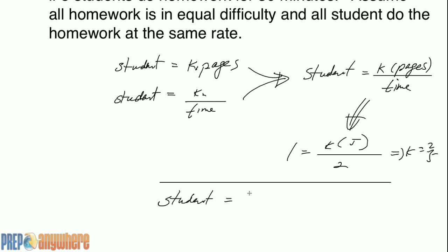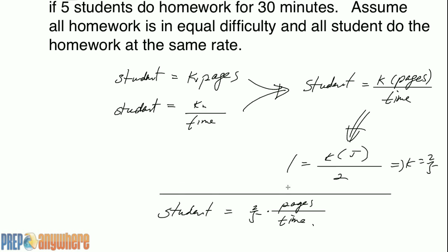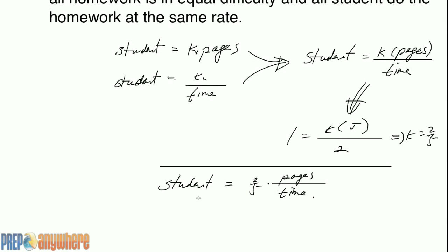Student equals two over five times pages over time. Now, how many pages are read if five students read for 30 minutes?